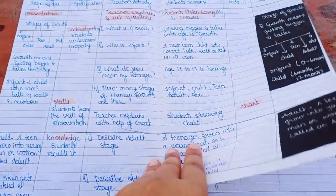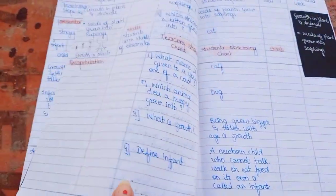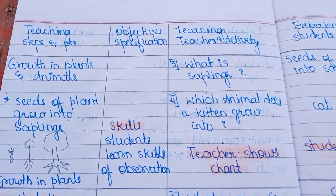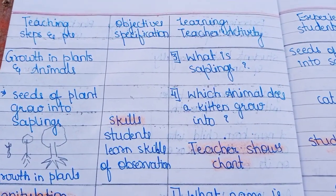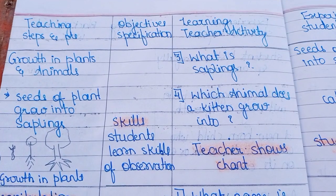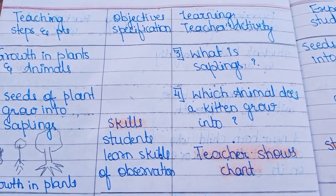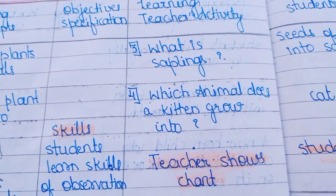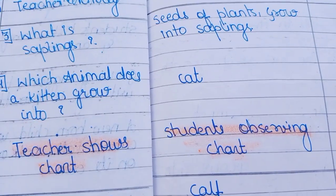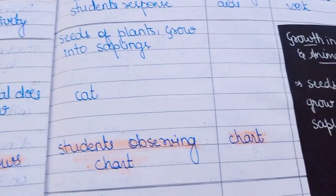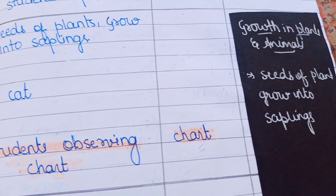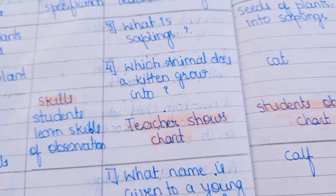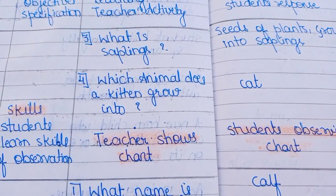Let's turn the page and see the rest of the Presentation part. Here we have questions like 'What is a sapling?' and 'Which animal does a kitten grow into?' — we have to ask these questions. Here is the blackboard work. The teacher shows charts to students, students observe the chart, and the teaching aid is 'chart.'